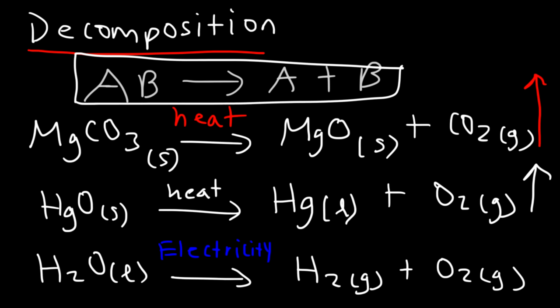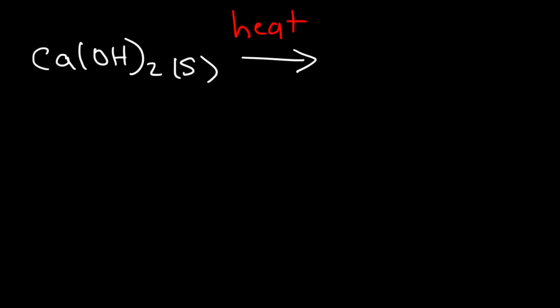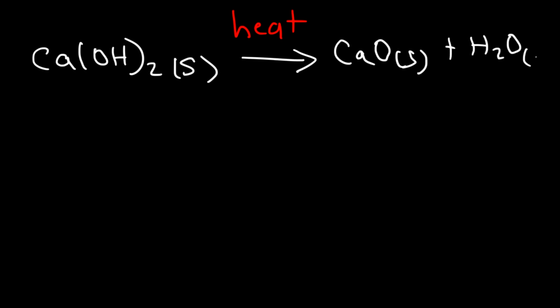The general equation is: AB turns into A plus B. For instance, if we have a metal hydroxide like calcium hydroxide and add heat, anything volatile will leave the reactant. This produces calcium oxide and water vapor. If the temperature is above 100°C, water will be in its vapor form; below 100°C it could remain liquid.